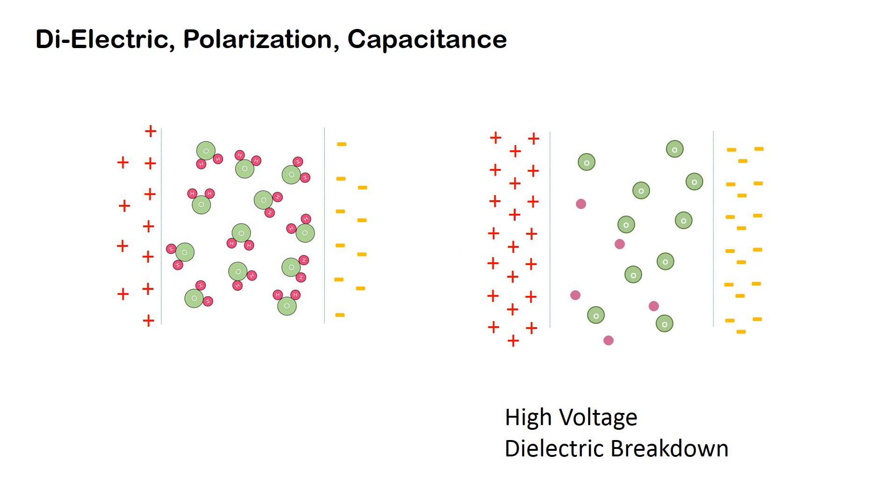When very high voltage is applied to a capacitor, the charges may break out of the molecules and the capacitor then behaves like a regular conductor. This is known as a dielectric breakdown.